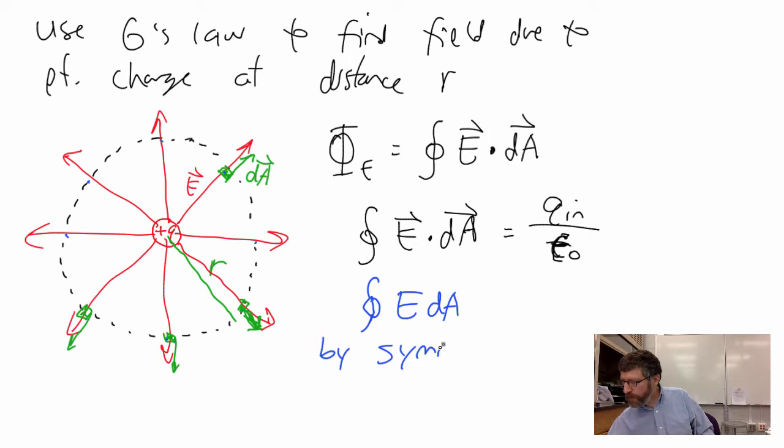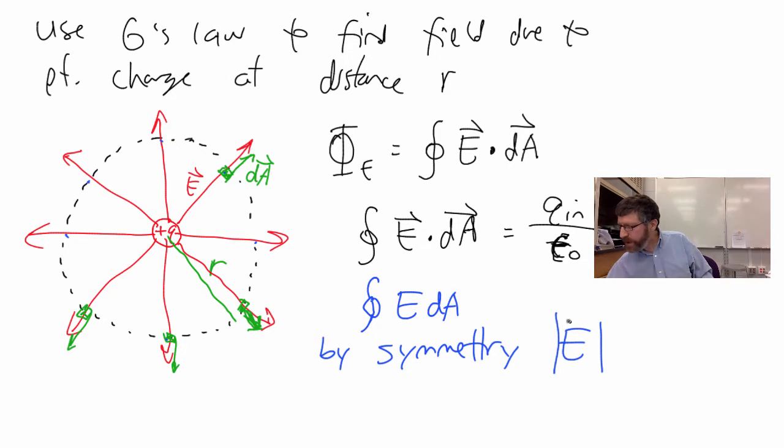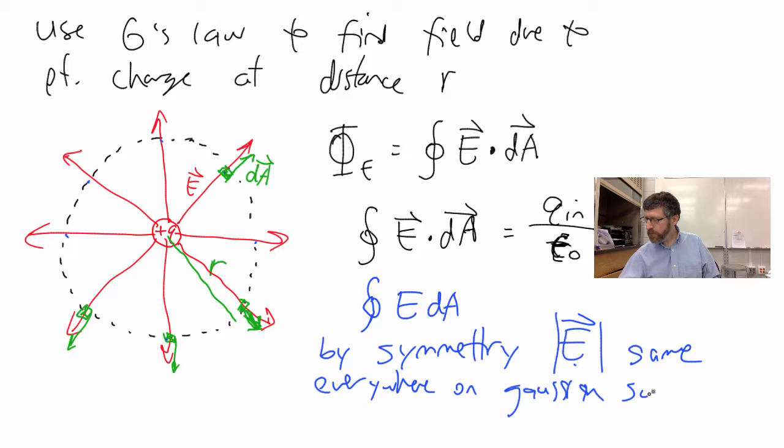and you may have to argue that on an AP exam, by symmetry, e is magnitude. That's how we indicate the magnitude of a vector. It is the same everywhere on the Gaussian surface. Good news, if it's really a constant, what can you do in terms of the integral here?